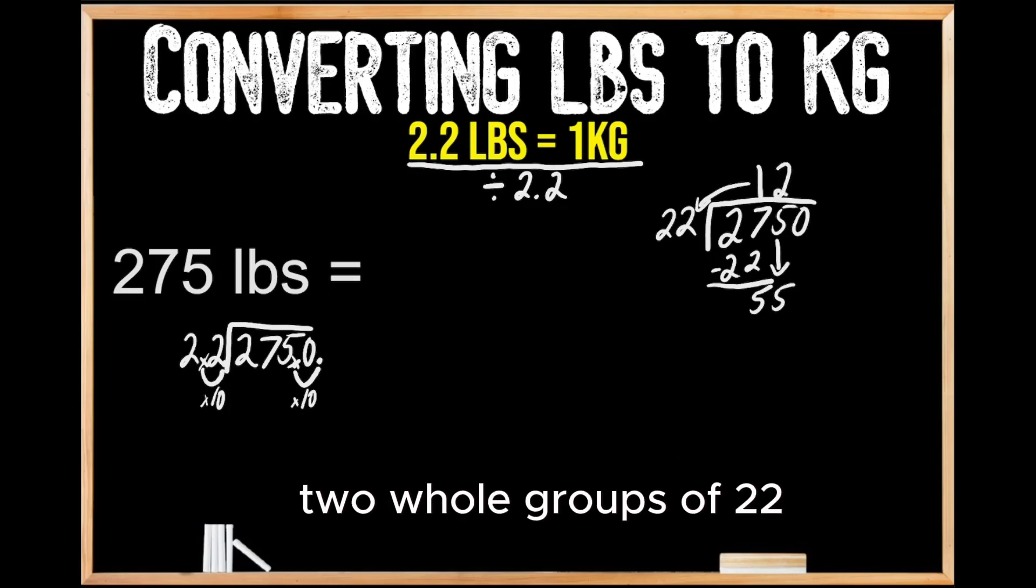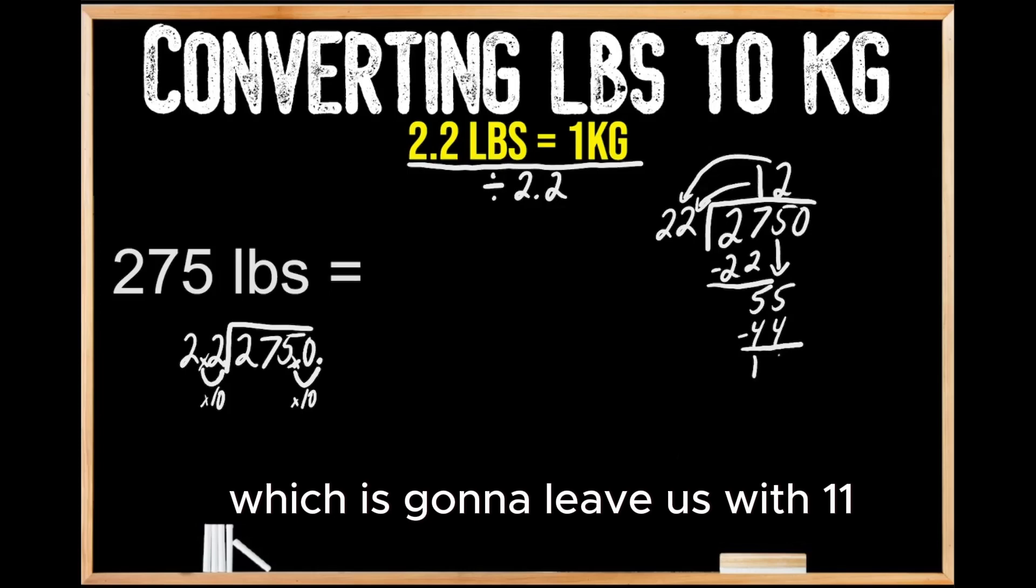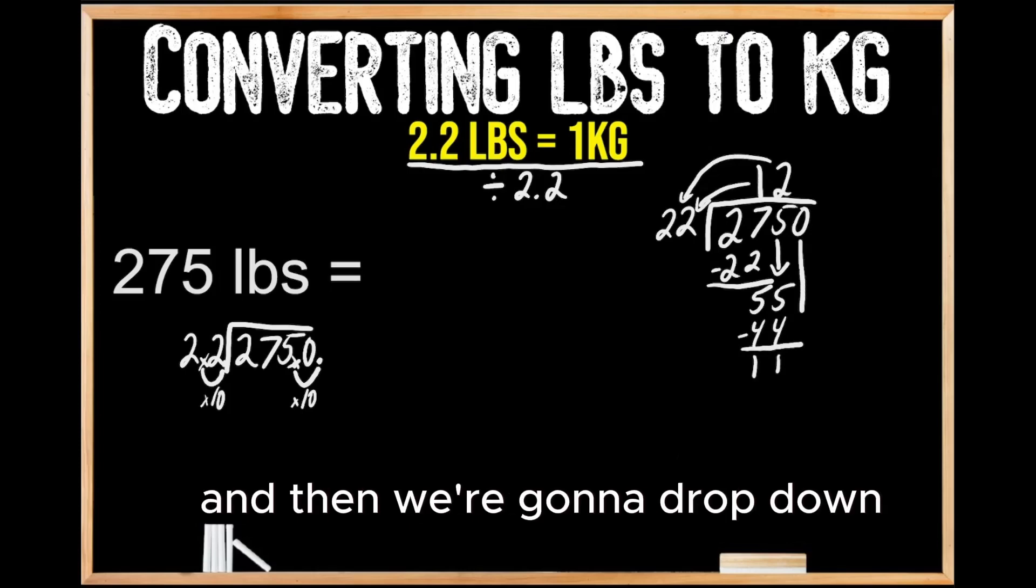Well, we know that we can make 2 whole groups of 22. When we multiply 2 times 22, we get 44, and then we're going to subtract 44 from 55, which is going to leave us with 11. Then we're going to drop down the next digit, giving us 110.